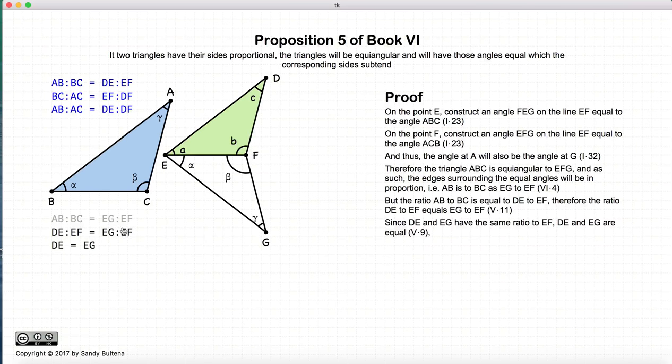Again, we can just sort of cross out that little bit there. So DE is equal to EG. And just using the same logic, we can show that DF is equal to FG.